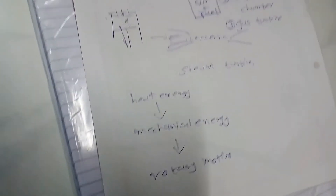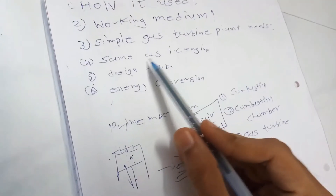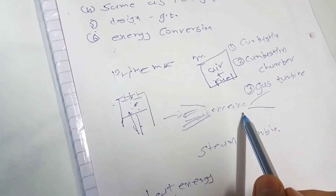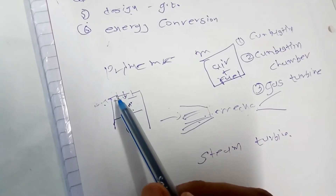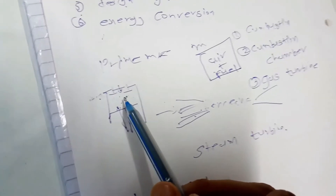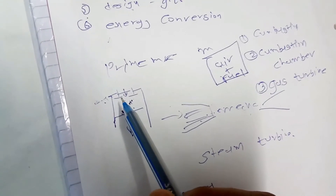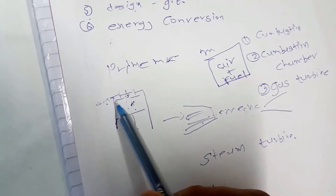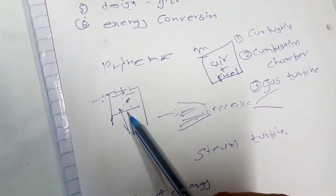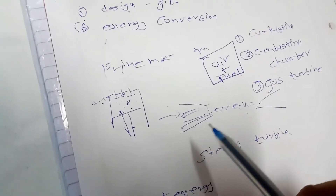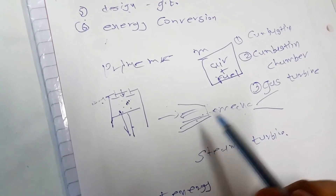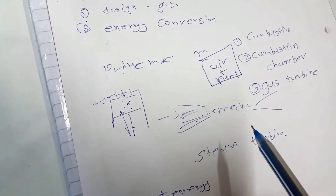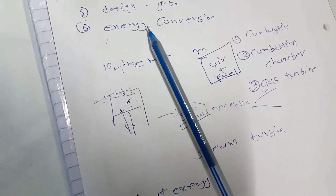There is one key difference between an IC engine and a gas turbine. In an IC engine, fuel comes in, the inlet closes, it ignites and expands, and then it closes again during that process. But in a gas turbine it is not the same — fuel flows continuously and smoothly; it does not close the inlet or outlet. It just flows smoothly and continuously. So this is it for today.